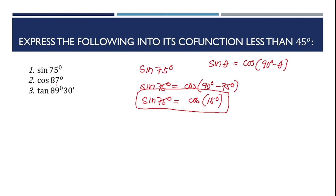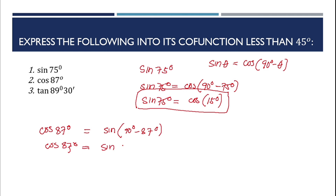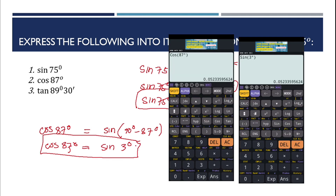For cosine 87 degrees: the cofunction of cosine is sine of 90 degrees minus 87 degrees. Therefore cosine 87 degrees equals sine 3 degrees. This is the answer. If we calculate it using a calculator, we get the same result.